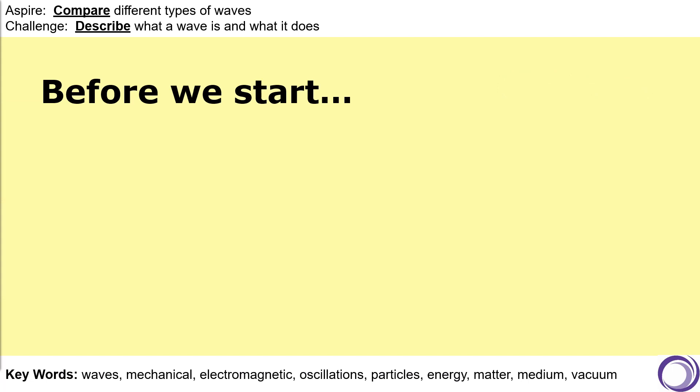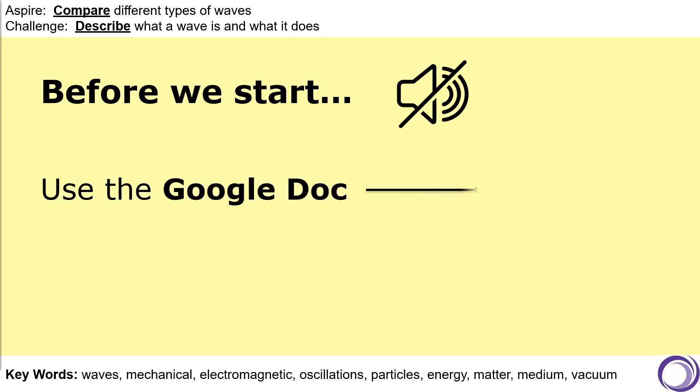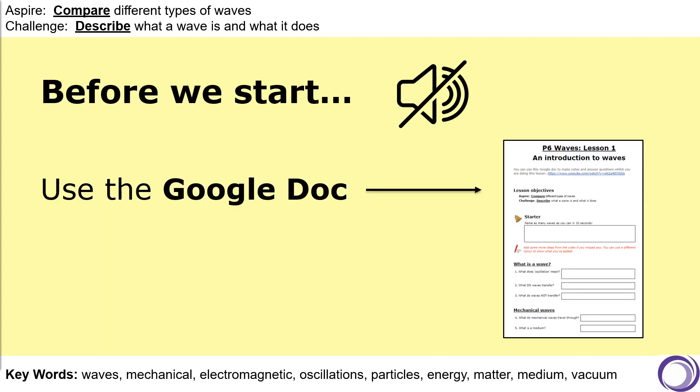Before we start it's a good idea to try and avoid distractions so put your phone away or turn off notifications. You can use the Google documents that we've created for this lesson to make notes either directly on a computer, or by printing it off, or if you prefer you can just use pen and paper or work in a notebook.